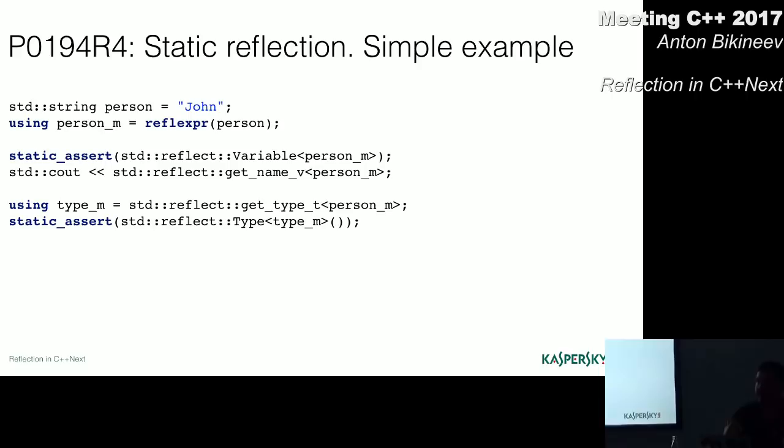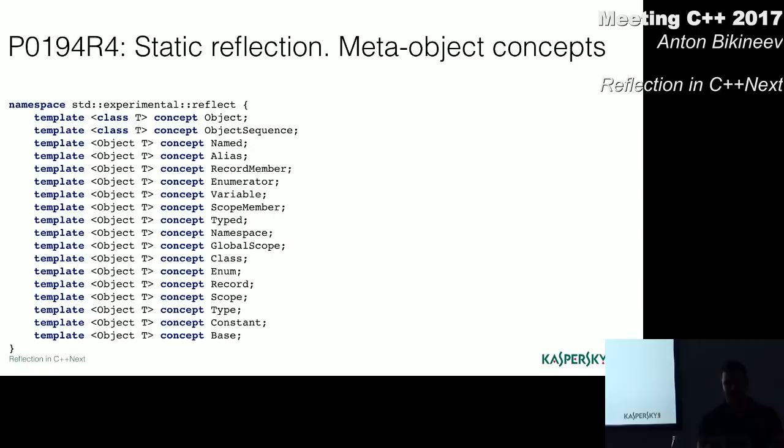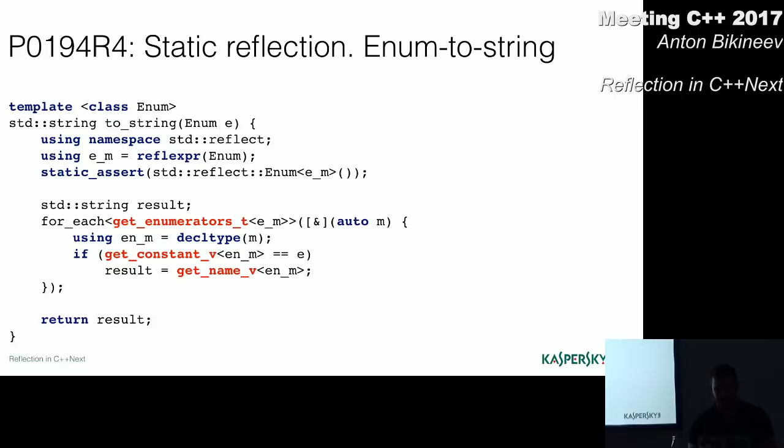And there is a supporting library that includes various concepts of different kinds of metadata and also meta functions that are used to manipulate with these objects. Let's take a look at a simple example. Let's suppose that we have a string object called person. We use the reflexpr operator on the string and we get a type, some specific type, meta object type person M.